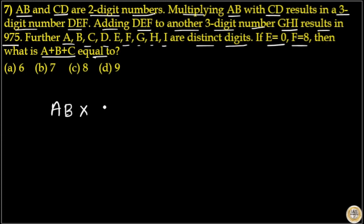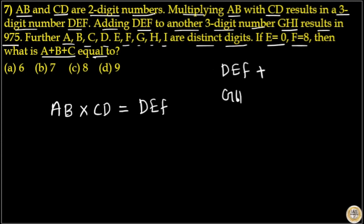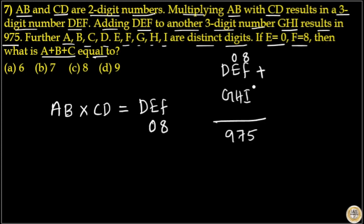AB into CD will give you DEF, and DEF plus GHI is equal to 975. E is equal to zero and F is equal to eight. That means eight plus I will give you a unit digit of five.